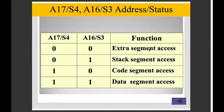We have 4 segments in the Bus Interface Unit: CS, DS, SS, and ES. We can use S3 and S4 to access which segment we are currently accessing.